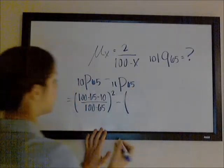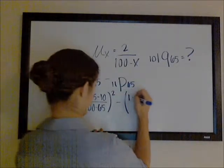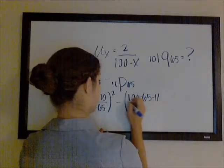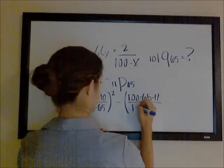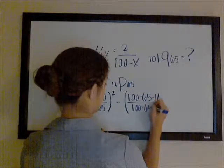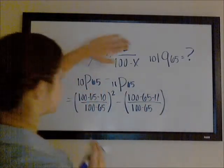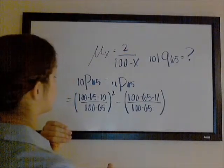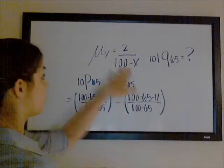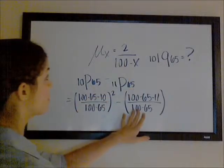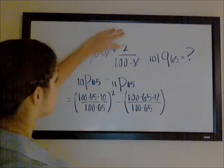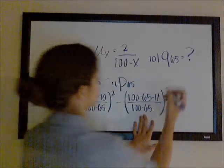And then similarly for 11p65, we'll have 100 minus 65 minus 11 over 100 minus 65. So just what it would be if you didn't have this constant, if this was just a 1, and you had the future lifetime having de Moivre distribution with a limiting age of 100. But then since we multiplied the force of mortality by a constant, we're going to raise the survival probability to that constant.